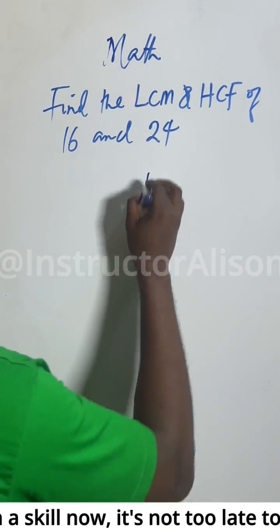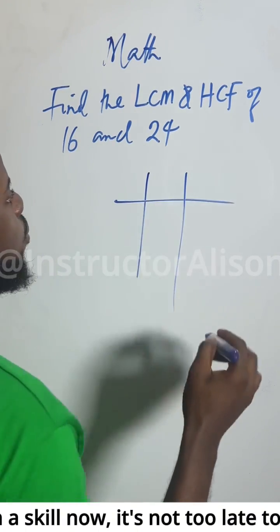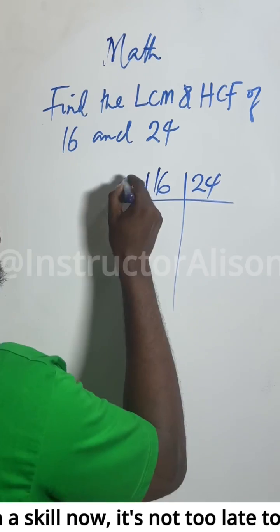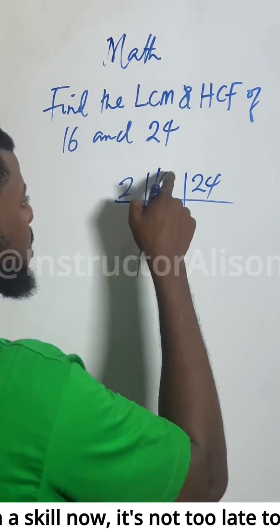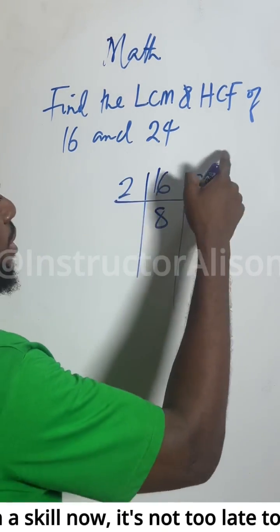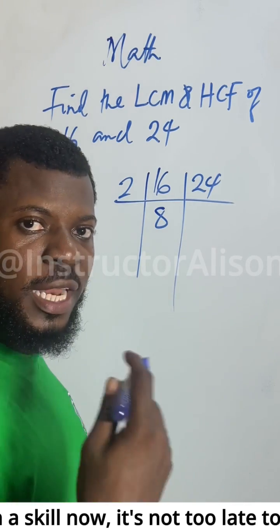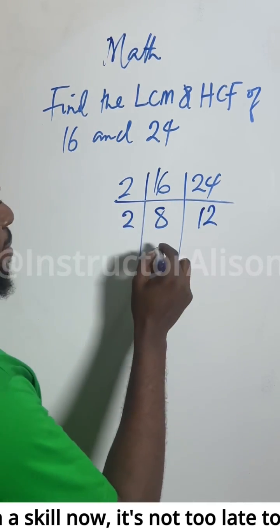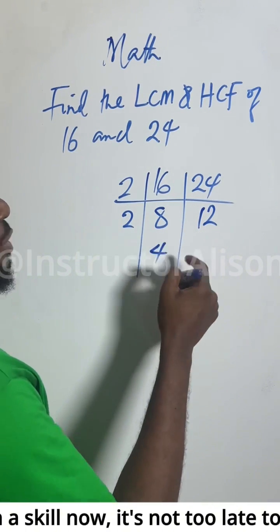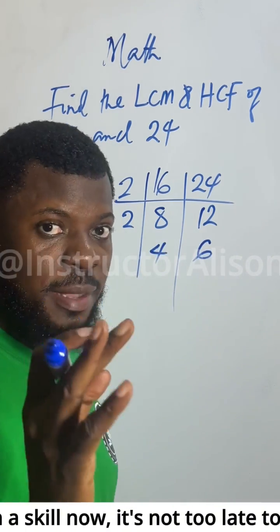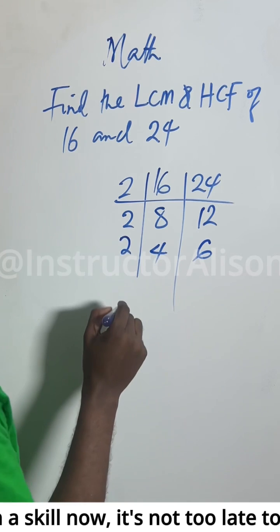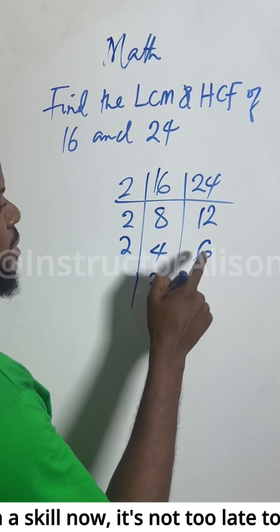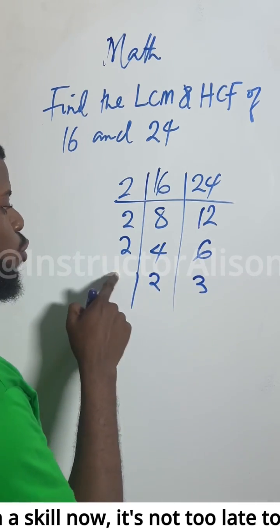We have 16 and 24. Two will go inside 16 — how many times? Eight times. Two will go inside 24 — how many times? Twelve times. Two will go inside 8 — how many times? Four times. Two will go inside 12 — how many times? Six times. Two will go into 4 — how many times? Two times. Two will go into 6 — how many times? Three times.